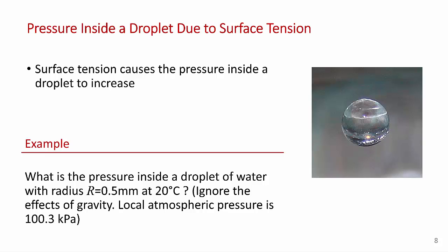I mentioned earlier that surface tension acts like a membrane, much like the membrane on a rubber balloon, causing the pressure inside of a droplet to increase. And as you'll see, for small droplets, the pressure inside the droplet can become very large. This is an example of calculating that effect. The question asks, what is the pressure inside a droplet of water with a radius of half a millimeter at 20 degrees C? And you're told to ignore the effects of gravity, and that the local pressure is 100.3 kPa.